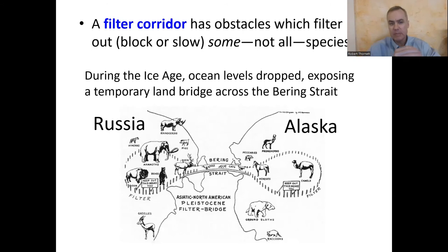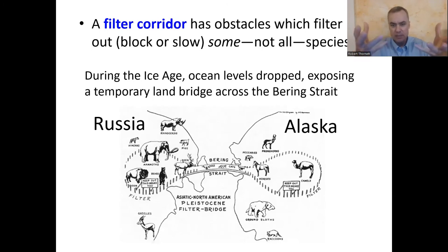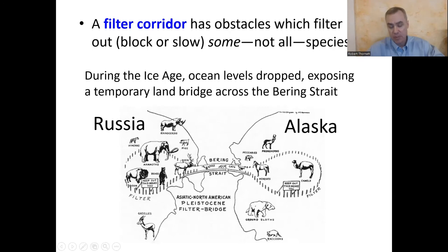One example is during the ice age: when more ocean water was locked up in ice, the oceans went down, which exposed a piece of land — the Bering Land Bridge across the Bering Strait. So some species could actually walk from Asia to North America or vice versa.